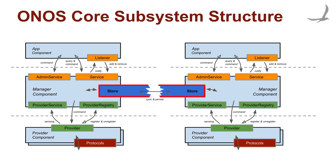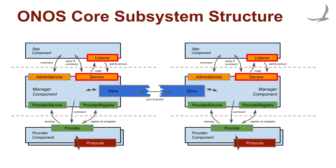Events that occur elsewhere in a cluster are conveyed by the store to the local manager, which then dispatches them either to its local listeners or takes action on the environment. Functionality that is deemed to be reserved for privileged principals is usually offered through an administrative service, which is separate from a service available to all applications. For example, the Device Admin Service allows deletion of a device from inventory, whereas the Device Service allows all other, generally read-only, interactions with the inventory of network infrastructure devices.